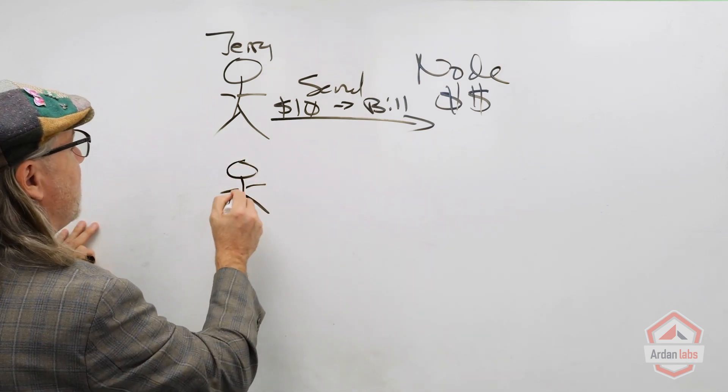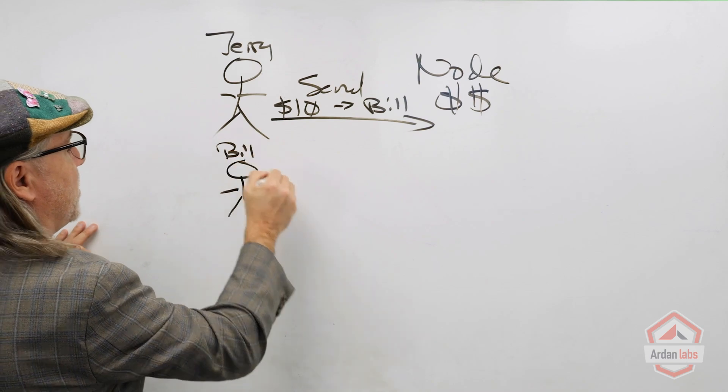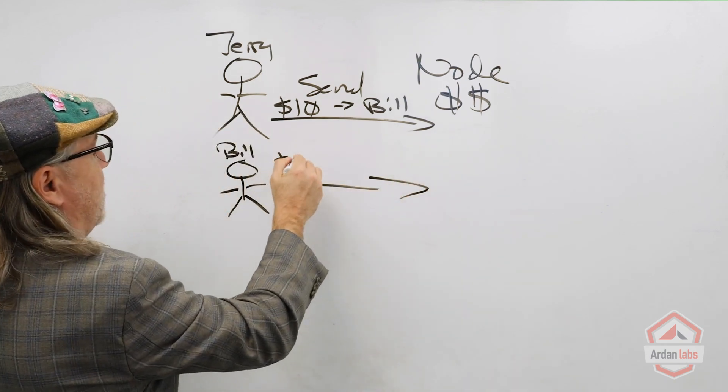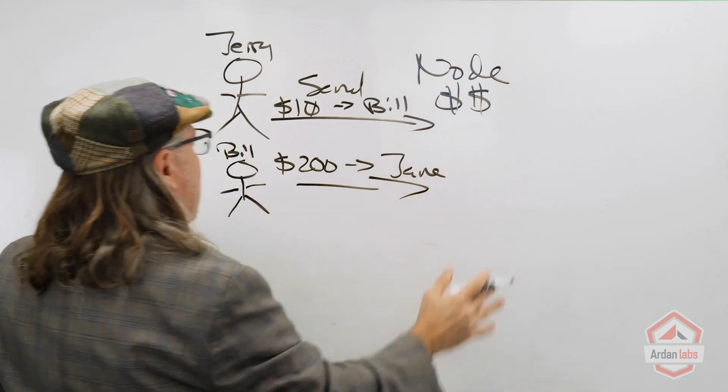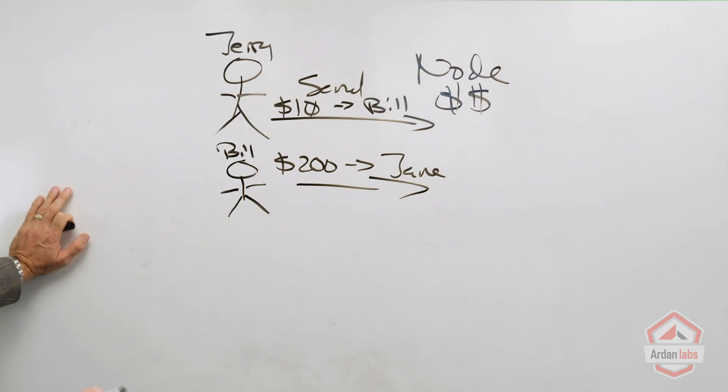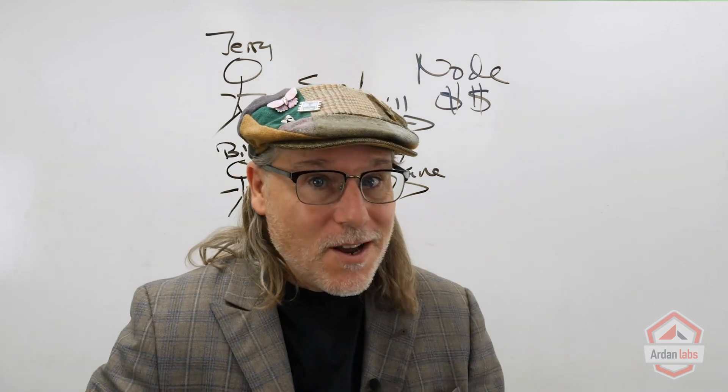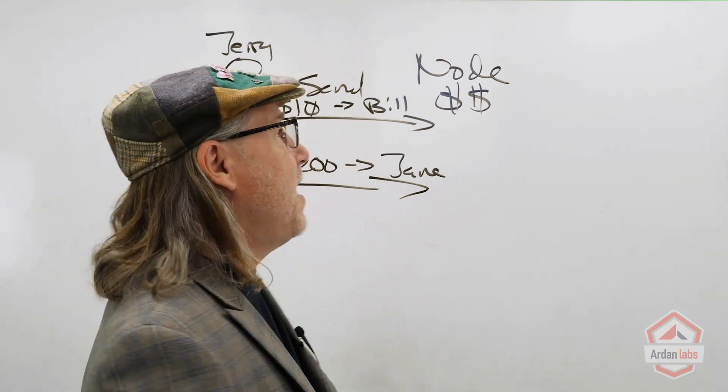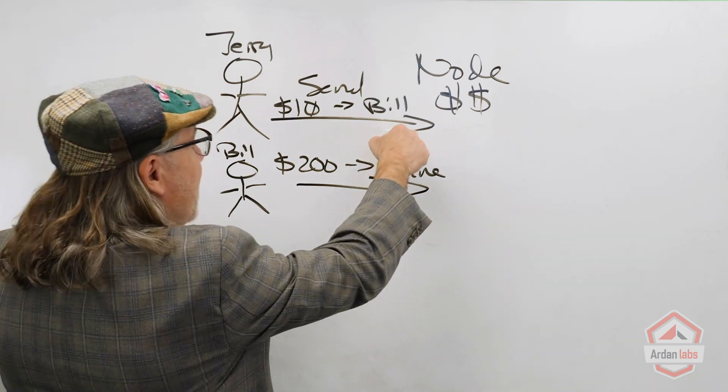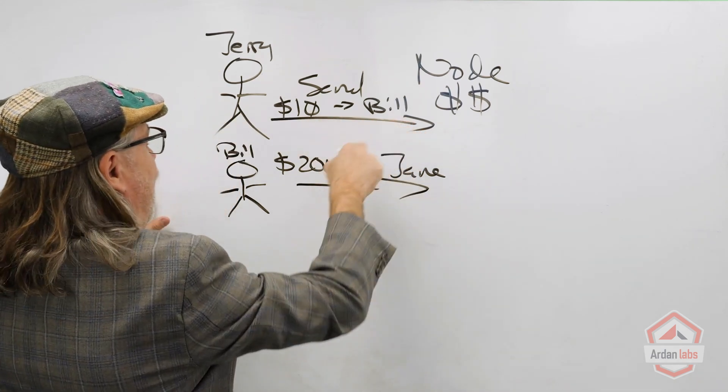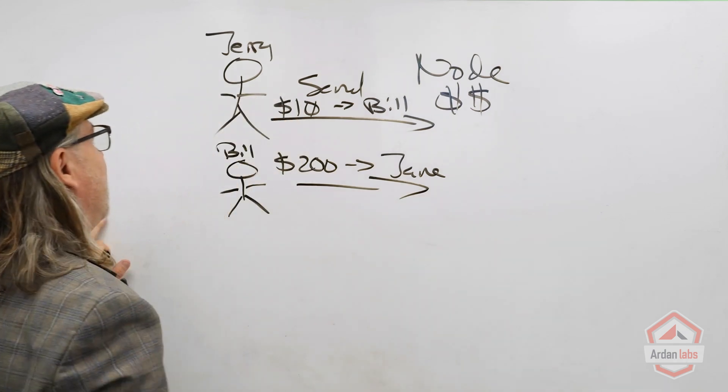The same thing here—Bill is over here and Bill says, I want to send 200 bucks to Jane, and again it's going to happen. Now what we want to do from a node perspective is that we can validate that this is Jerry sending it. We need to know that this is Jerry, we need to know this is Bill.